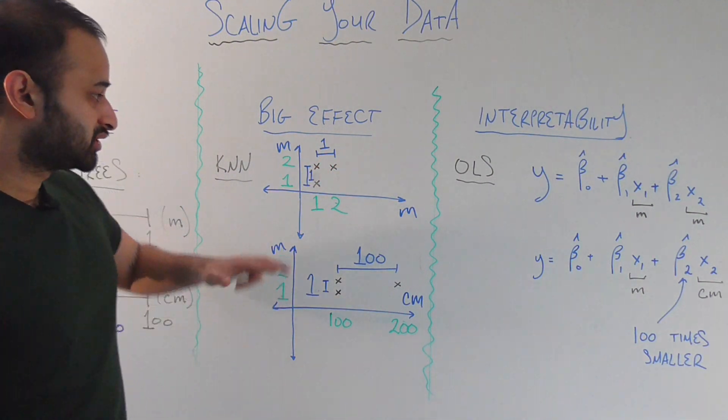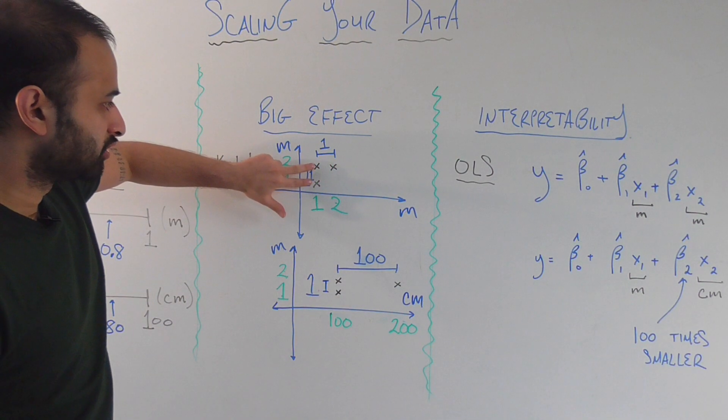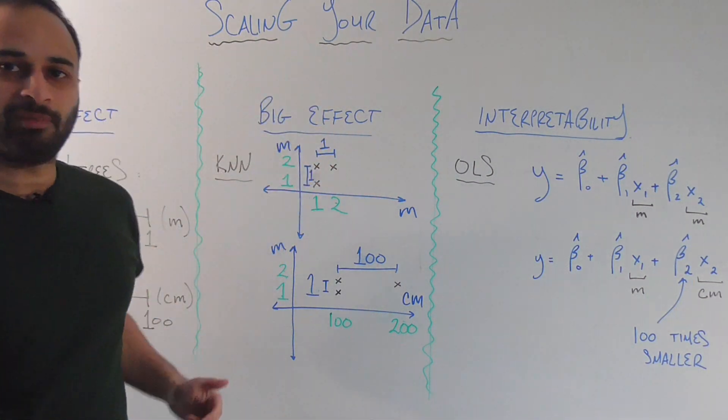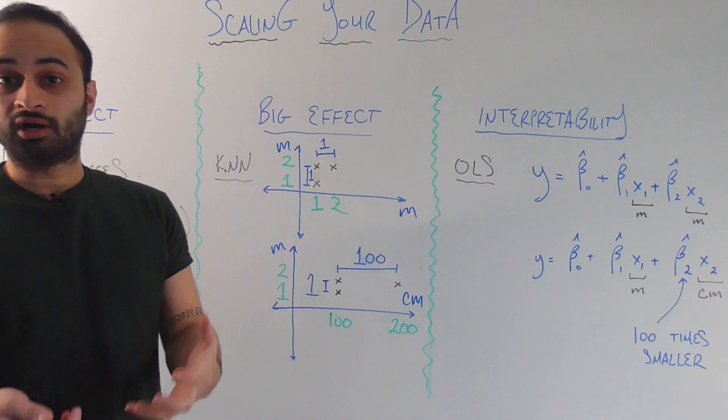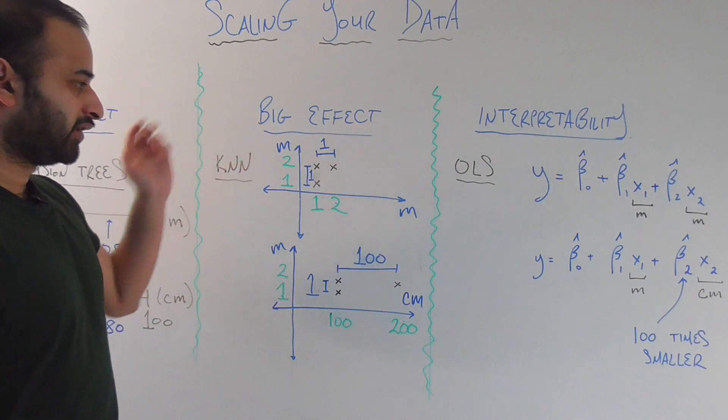So in the sense of k-nearest neighbors, these two guys are just as close to each other as these two guys. And that makes a lot of sense. They're both 1 meter of distance apart for either variable.